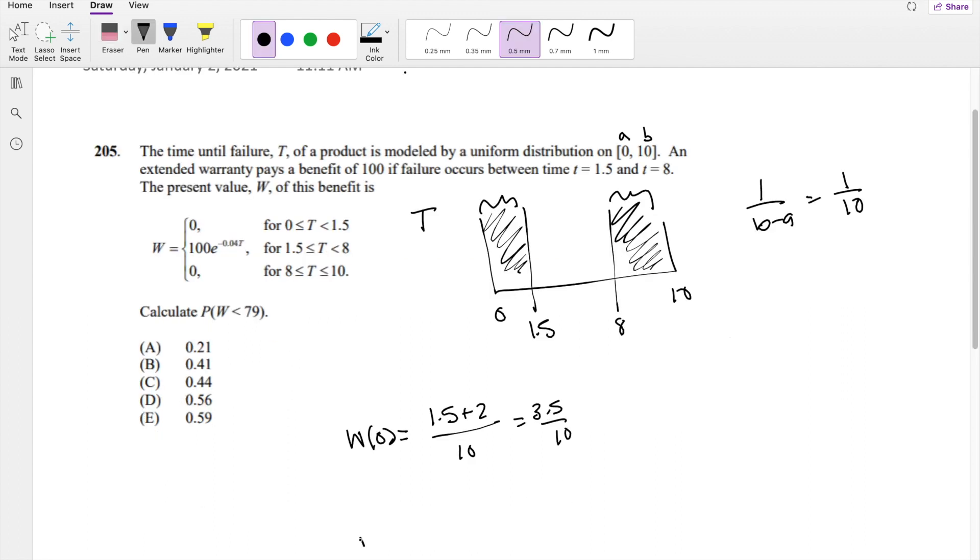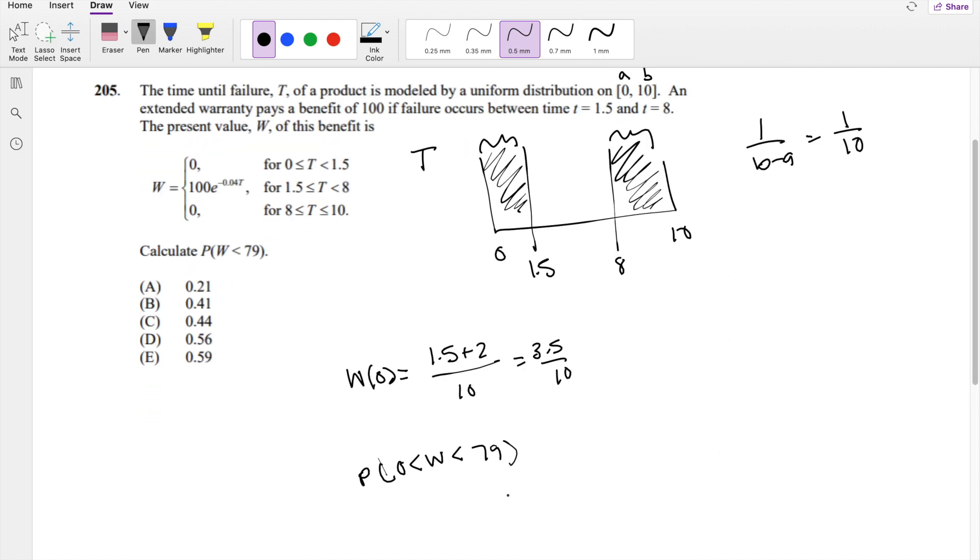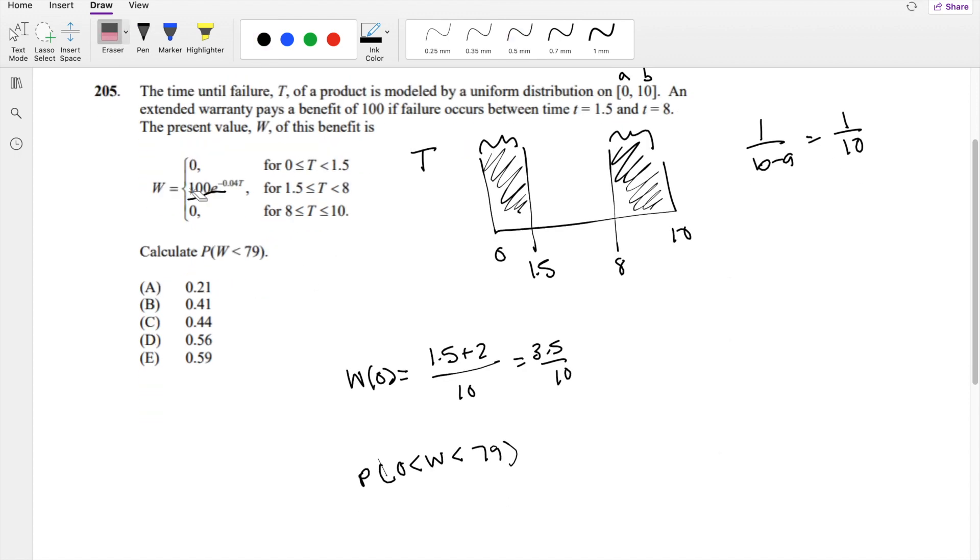What is the probability when W is between 0 and 79? We know that W equals this expression right here. We can perform a transformation because we don't know the probability in terms of W, but we do know the probability in terms of T. It's a uniform distribution, so we can do that right here.